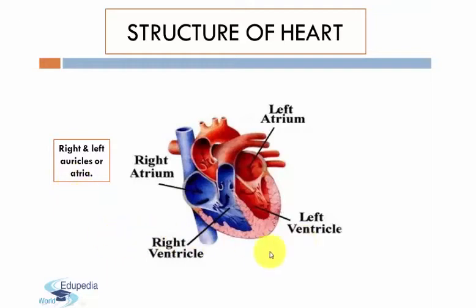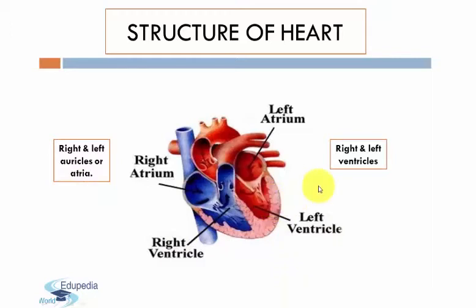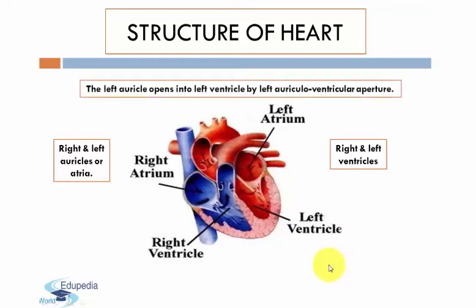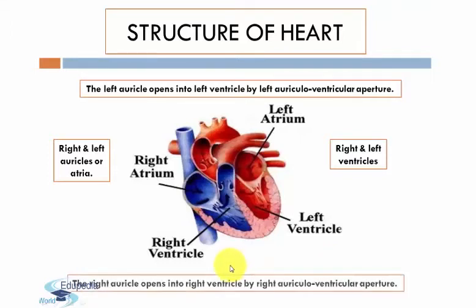The lower two chambers, as you can see here in the figure, are known as the left and right ventricles. The left auricle opens into the left ventricle by a left auriculo-ventricular aperture, and the right auricle opens into the right ventricle by a right auriculo-ventricular aperture.